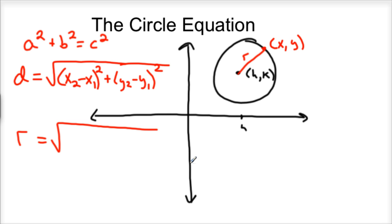So r equals the square root of, well let's use my second point as (x,y). It'd be x minus the x-coordinate of your center, which is h squared, plus y minus k squared.